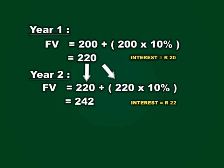At the end of the second year, the interest you are charging your friend is not on the 200 Rand, but rather on the value of the money at the end of the first year. The money was valued at 220 Rand at the end of the first year, which means you are going to be charging your friend 10% on 220 Rand. 10% of 220 Rand is equal to 22 Rand, so for the second year the interest you are charging is 22 Rand. That means at the end of the second year, your 200 Rand present value is now worth 242 Rand.